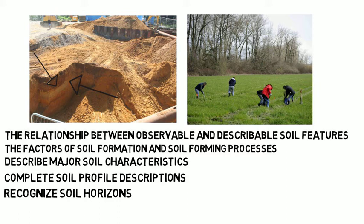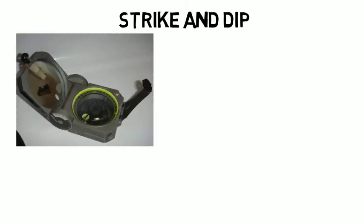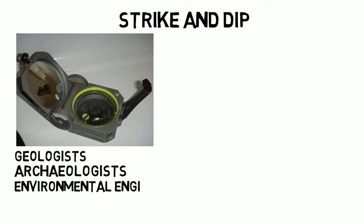Another key technique in earth science and geology is taking strike and dip measurements. You would take these measurements using a Brunton compass, which is a special instrument used to make accurate degree and angle measurements of rock bedding and is used by geologists, archaeologists, environmental engineers, and surveyors.